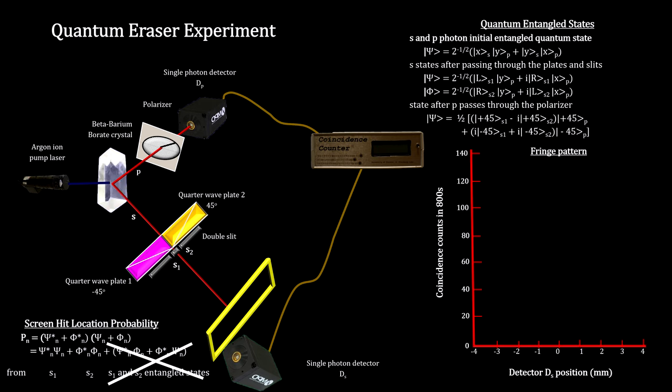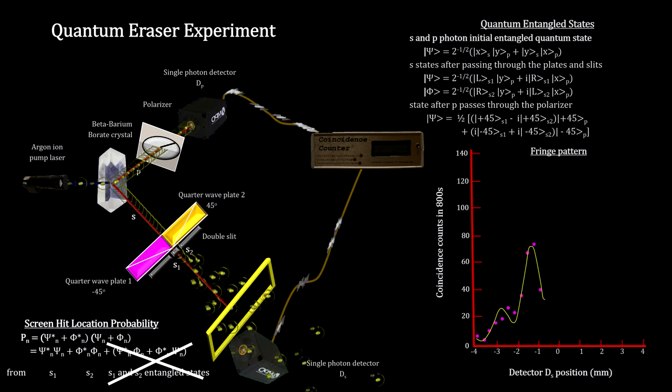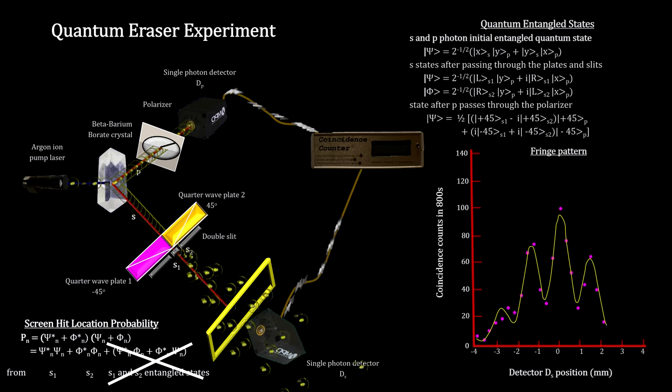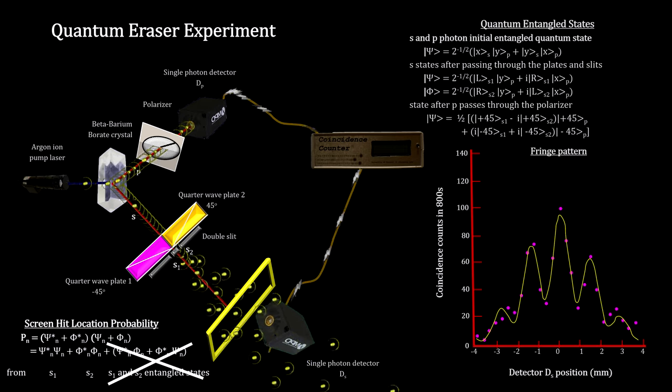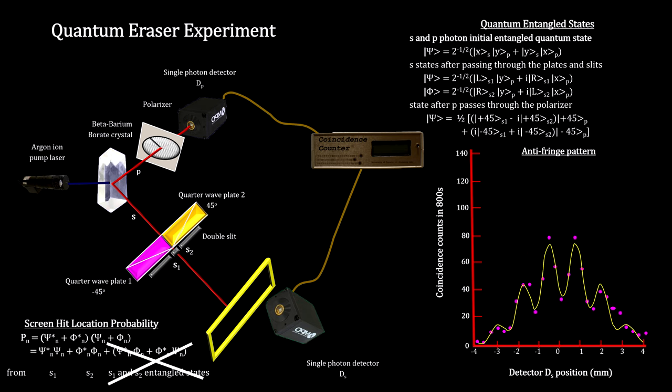But now we will no longer count all the detected S photons. We count only the ones that correspond to P photons that make it through the polarization filter. This will produce an interference-like pattern that reflects what is going on with the P photons. This is called a fringe pattern. When we do a run with the filter at minus 45 degrees, we get the anti-fringe pattern.